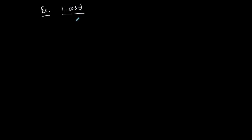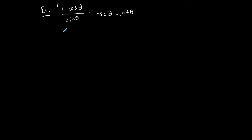Here's the first example: (1 minus cosine of theta) divided by sine of theta is equal to cosecant of theta minus cotangent of theta. When verifying a trig identity, you pick a side to manipulate. I'm choosing the left-hand side because I see something divided by a monomial. I can use algebra to separate this into 1 over sine of theta minus cosine of theta over sine of theta. This is an algebra move, not trigonometric.